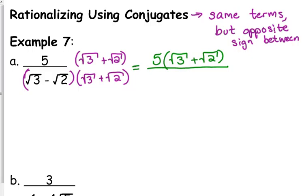So the square root of 3 times the square root of 3 is 3. The outside gives us positive square root of 6. The inside gives us negative square root of 6. And the last, positive times the negative is a negative. Square root of 2 times the square root of 2 is 2. So the positive square root of 6 and the negative square root of 6 cancel each other out. That will happen every time. That's the purpose of multiplying by the conjugate. It eliminates the radicals.